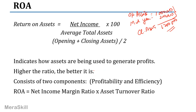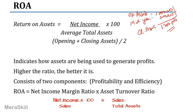This ratio actually consists of two components: a profitability ratio and an efficiency ratio. The profitability component is the net income margin ratio — net income by sales multiplied by 100 — multiplied by the turnover ratio, which is how efficiently you have used the assets, that is sales by total assets. The sales cancel out, and you get net income divided by total assets multiplied by 100, as before.